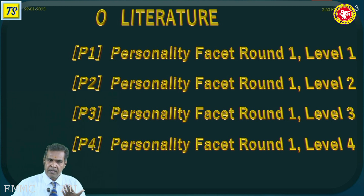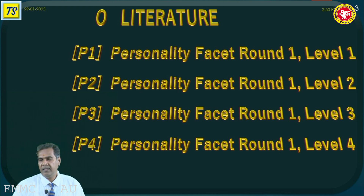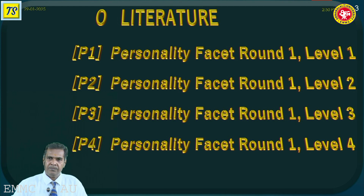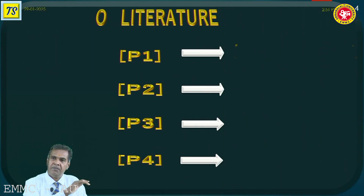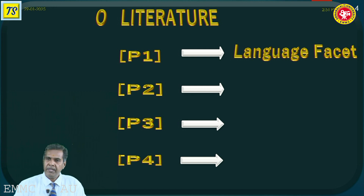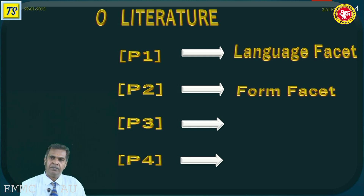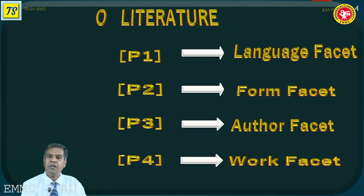The personality facet round one level one, personality facet round one level two, personality facet round one level three, and personality facet round one level four — these are the various levels identified in the main class literature. Of the four levels, the P4 level is the main focus of this lecture. The P1 facet exclusively discusses the language facet, P2 is related to the form facet, P3 discusses the author facet, and P4 covers the work facet.